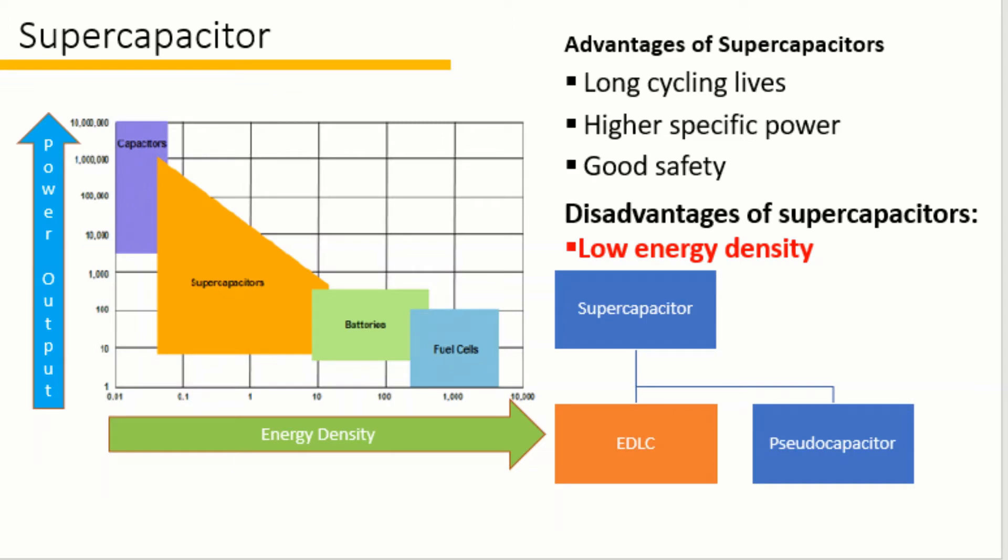In our tutorial one we briefly discussed the differences between three types of electrical energy storage devices: the electrical double layer capacitor, pseudocapacitor, and battery. We know that supercapacitors have high power density and low energy density. Except for high power density, the supercapacitor also shows long cycling life and good safety.